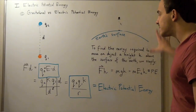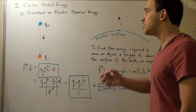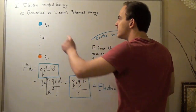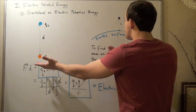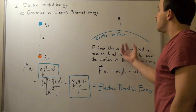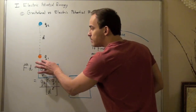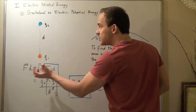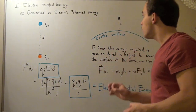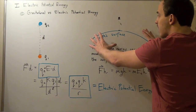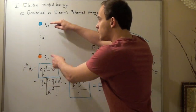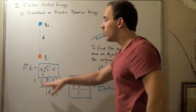Now let's follow the same exact steps to find the electric potential energy due to electrostatic forces. Suppose we have a positive charge Q1 and a negative charge Q2 separated by distance r. Just as dropping a mass causes it to fall toward the Earth, releasing the negative charge Q2 causes it to fly toward the positive charge Q1, according to Coulomb's Law. So, energy equals force times distance between them.